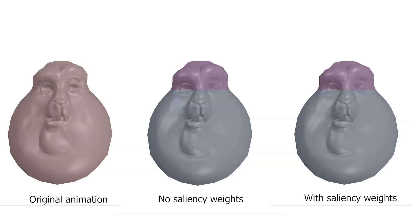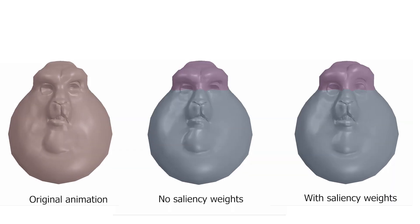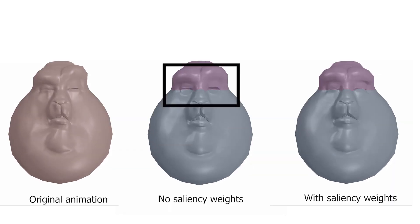Saliency weights guide optimization to better approximate small but perceptually important regions of deformation. Without saliency weights, optimization sometimes fails to produce stop-motion results that close the eyes. Weights can be increased around the eyelids to guide optimization to properly close the eyes.